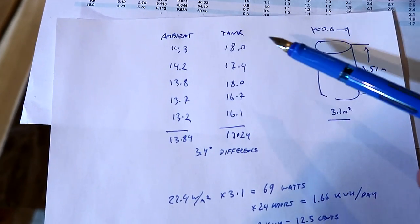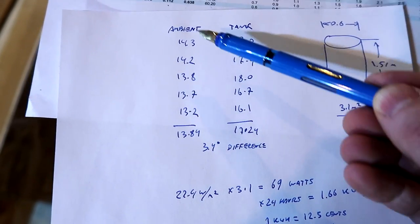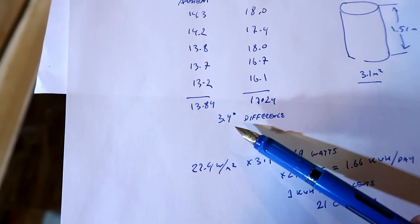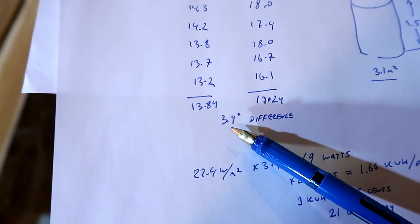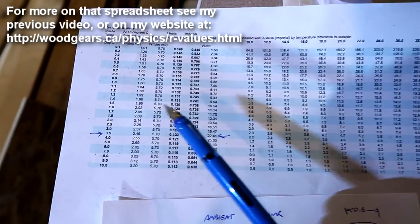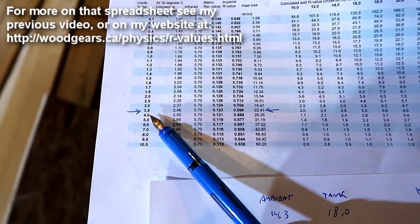I worked out the average of the temperature readings of the tank, and then the ambient temperature, and that makes for a 3.4 degree difference. Then looking that up on my spreadsheet, let's round it up to 3.5 degrees.